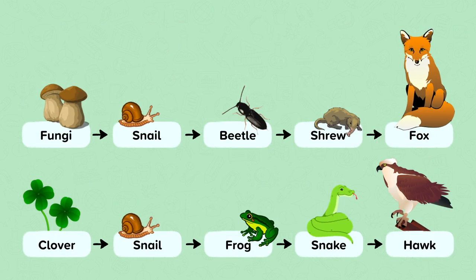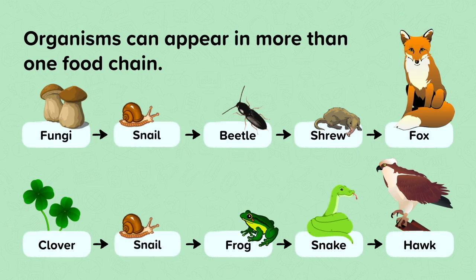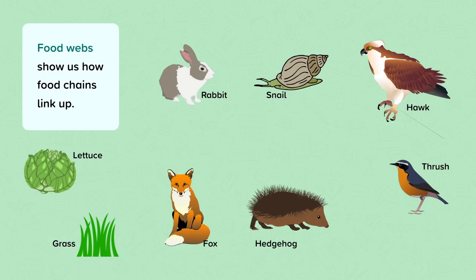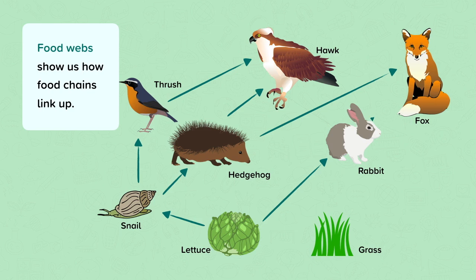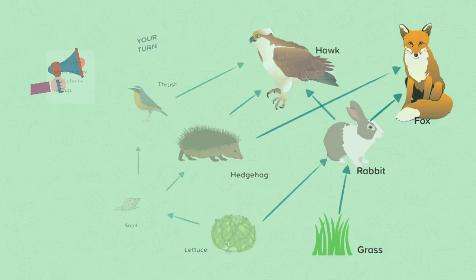Animals tend to eat more than one type of food, which means they will appear in more than one food chain. Here you can see that the snail is in both of these food chains. Food webs show us how the different food chains link up: lettuce to snail to thrush to hawk; lettuce to snail to hedgehog to fox; lettuce to snail to hedgehog to hawk; lettuce to rabbit to fox; grass to rabbit to hawk; lettuce to rabbit to hawk; and grass to rabbit to fox.